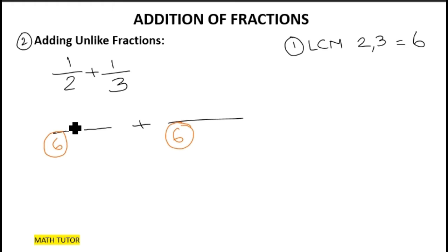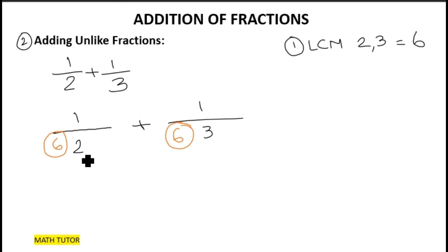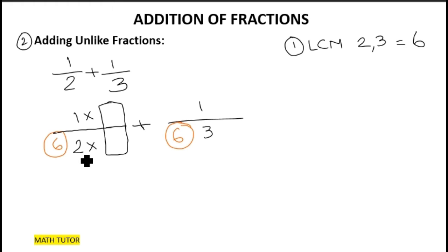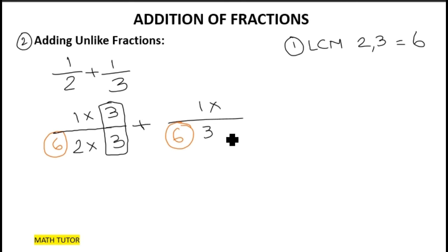I'm going to write the fractions as they are: one-half here and one-third here. Now the new denominator is six, but the original denominator was two. Here is an important step: we have to multiply the denominator two by a number to get six. Two times three equals six, so since we are multiplying the denominator by three, we have to multiply the same number three with the numerator also.